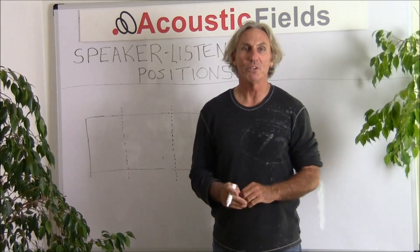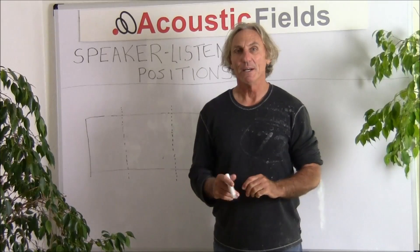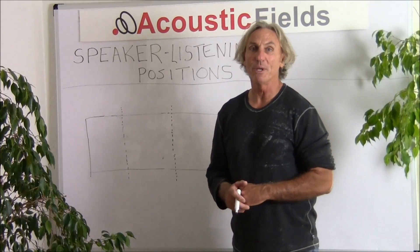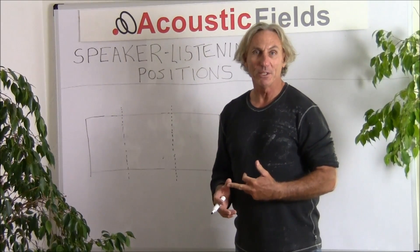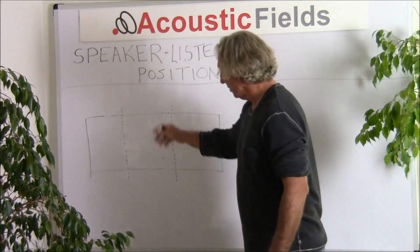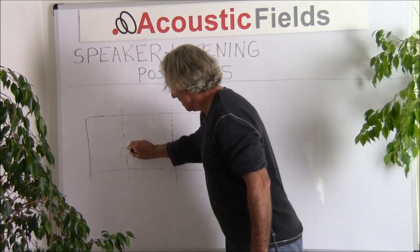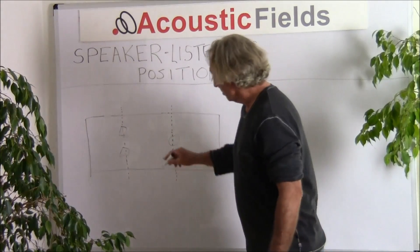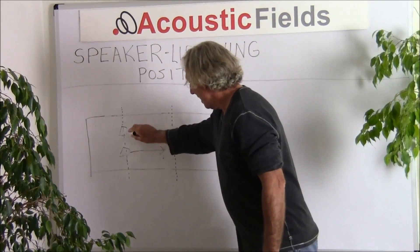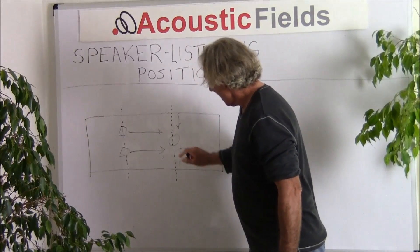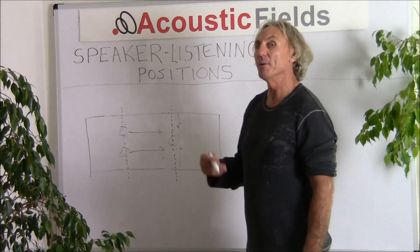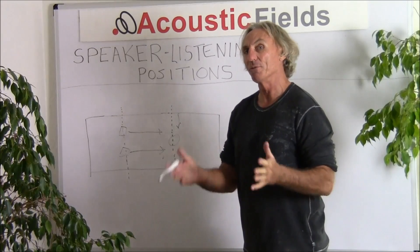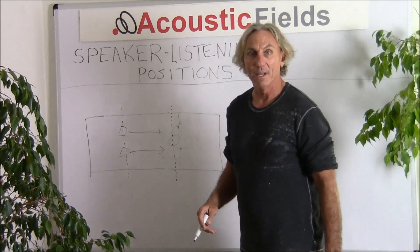So in our speaker and listening position journey, to find the right positions for our speakers and listening position, we have those three areas: room response, critical distance, and rule of thirds. The rule of thirds divides the room into thirds, positioning speakers at the first third and the listening position at the second. Critical distance is a balance between the room and the direct signal from the loudspeaker. And room response is measured and produces a frequency response curve. Those are the three general guidelines to go by.